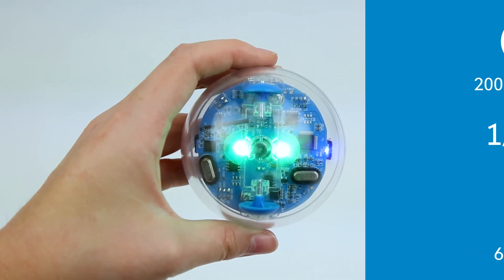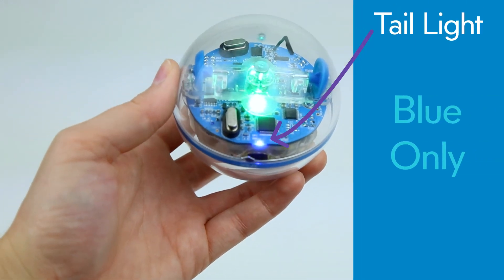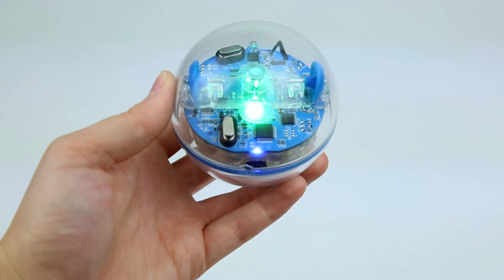The third light is a blue only LED light on the back of Sphero called the tail light, or back LED, that is used for aiming but can also be programmed.